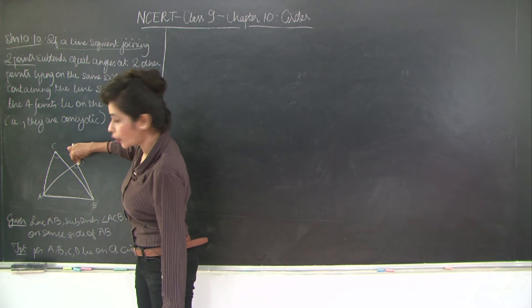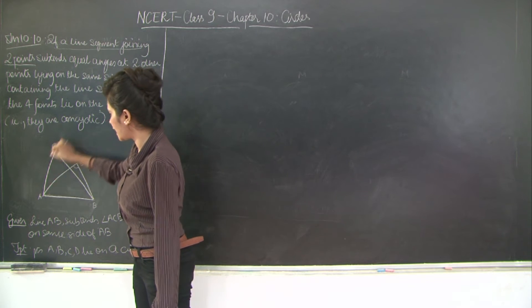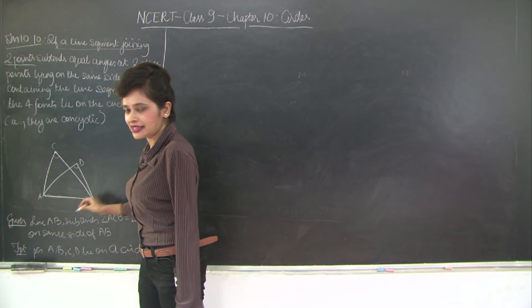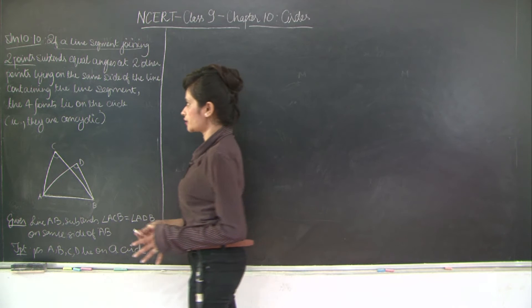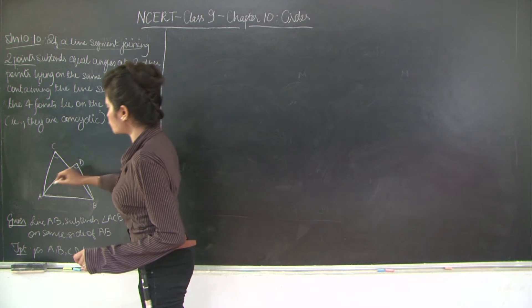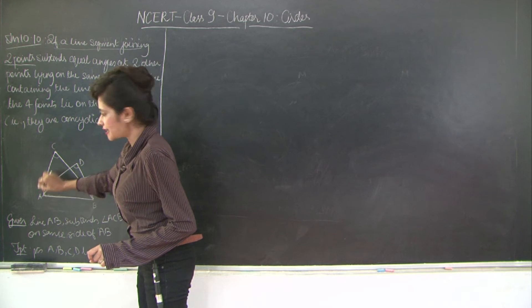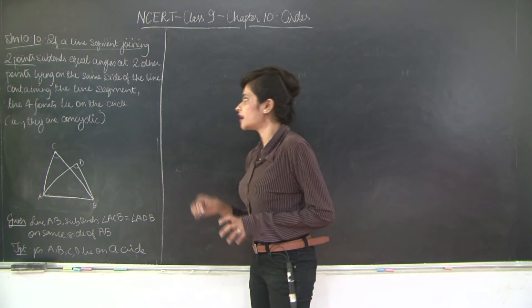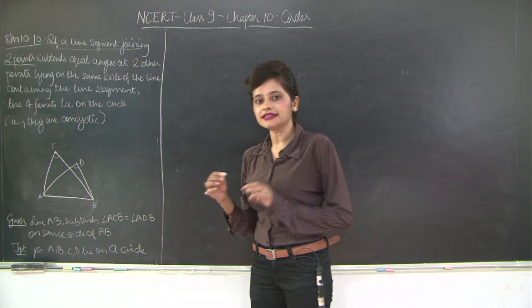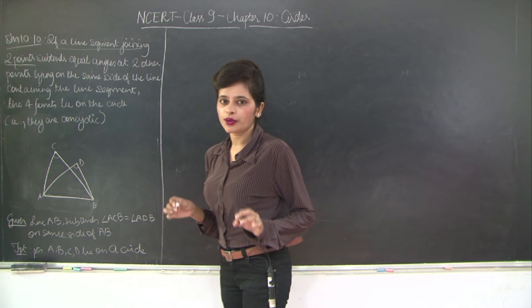So here I have the two points C and D such that angles A, C, B and A, D, B subtended by the line segment A, B are equal to each other. I need to prove that these points A, C, D and B lie on the circle or they are concyclic. Concyclic means they lie on the same circle. So how will we prove this?